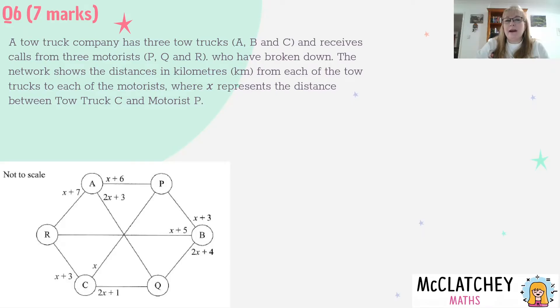Question six was worth seven marks. A tow truck company has three tow trucks A, B and C and receives calls from three motorists P, Q and R who have broken down. The network shows the distances in kilometres from each of the tow trucks to each of the motorists where X represents the distance between tow truck C and motorist P.